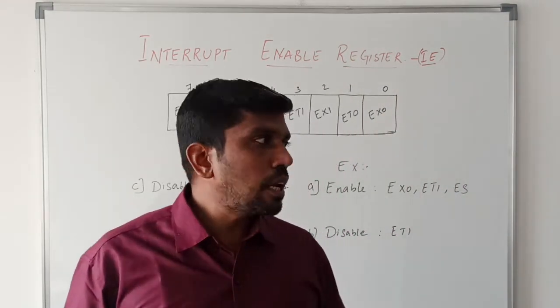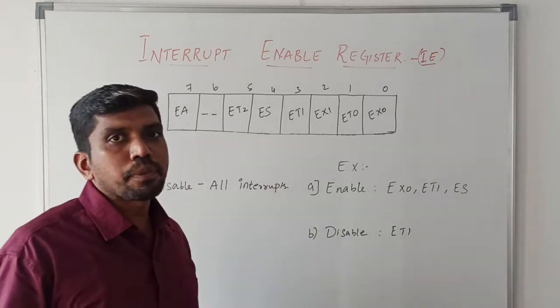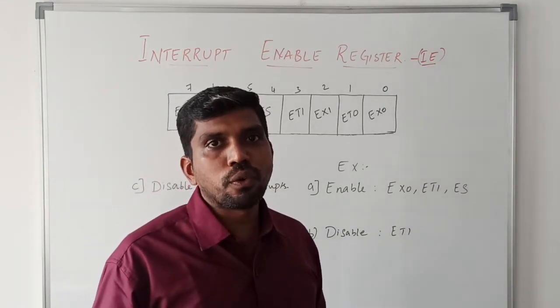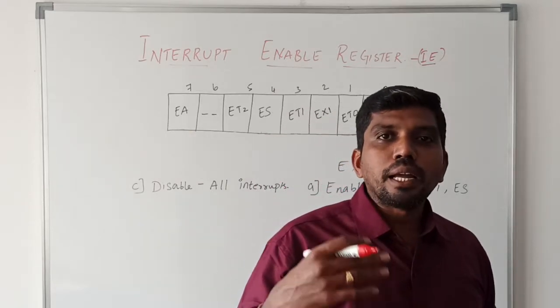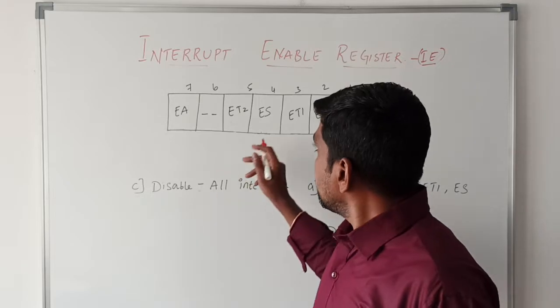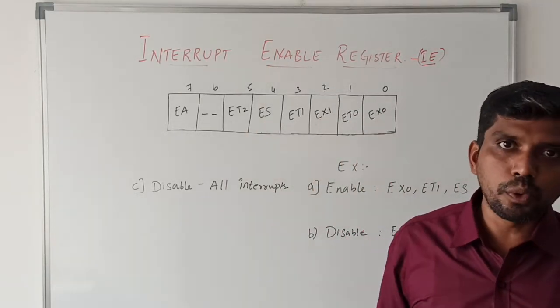In these six types of interrupts, two interrupts represent external interrupts and three interrupts represent the enable for timer one, timer two, and timer zero interrupts. And ES represents enable the serial code interrupt.